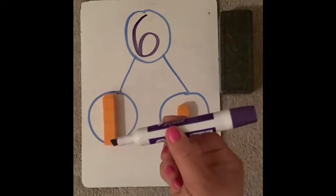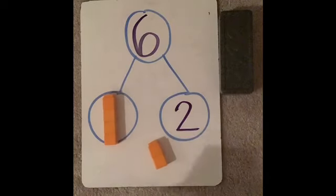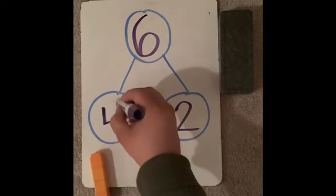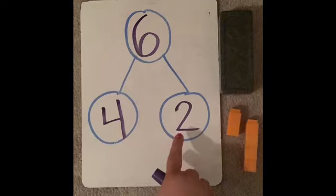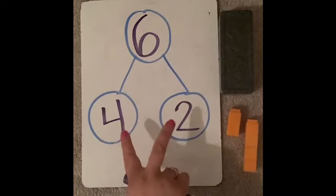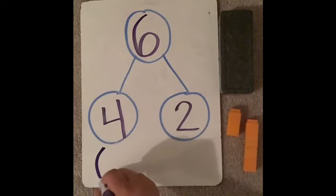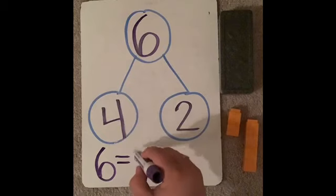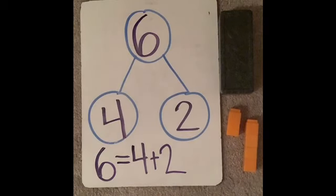Could I use my marker to draw a picture of what we just did with our cubes? Of course. I can replace these cubes with the number two, and move these cubes and write the number four. We just found hidden partners in the number six — one way to break six into two groups. Remember to write a number sentence at the bottom: six is the same as four and two. Go ahead and take a little bit of time to write that number sentence.